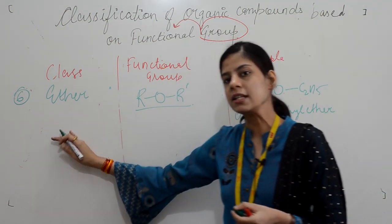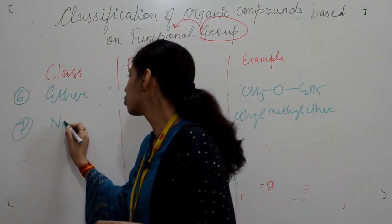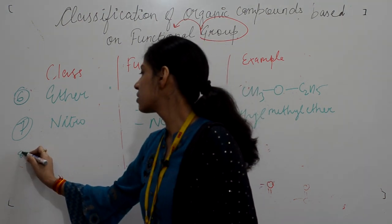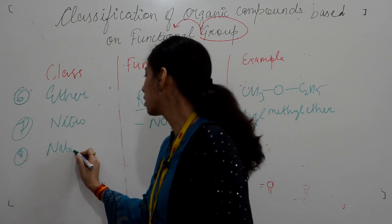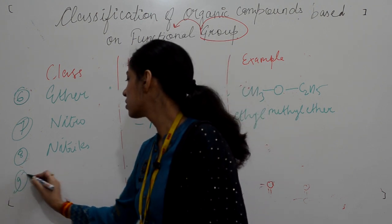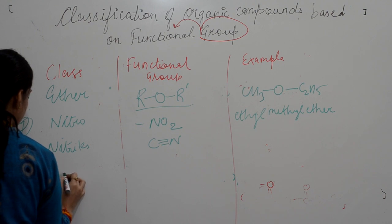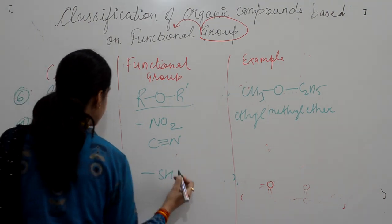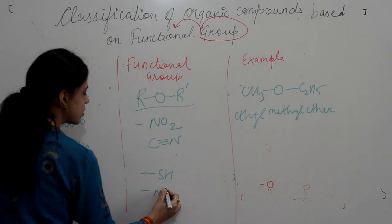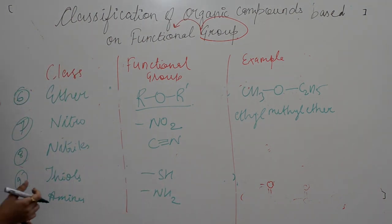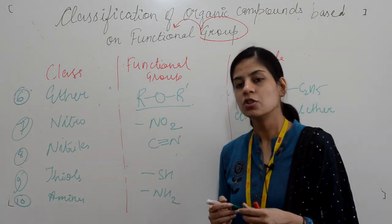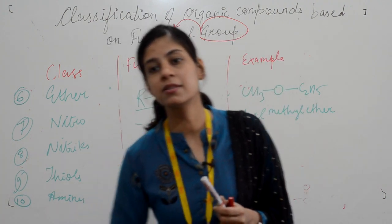Don't get confused between ether and ester. Next is the nitro group, where the NO2 functional group is present. Next is nitriles, where a C≡N group is present. Next is thiols, where an SH group is present. And last is amines, where an NH2 group is present. Note that amides and amines are different functional groups — amides are derivatives of carboxylic acid, while amines have the NH2 functional group.